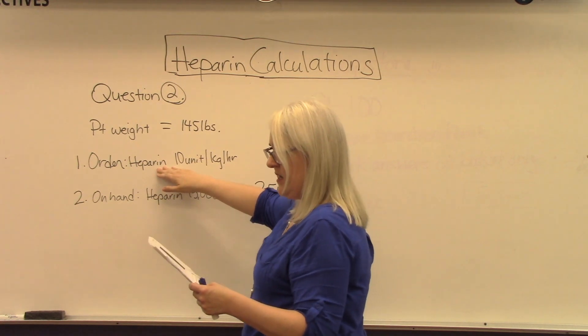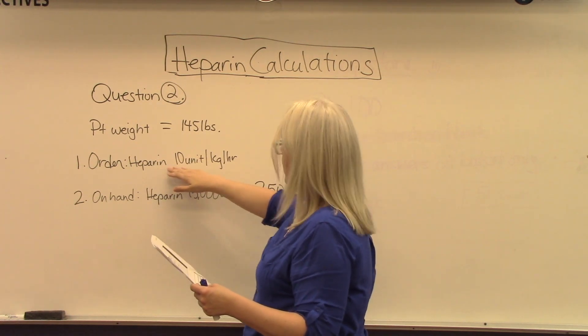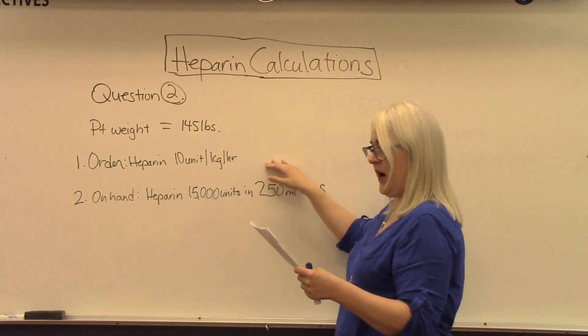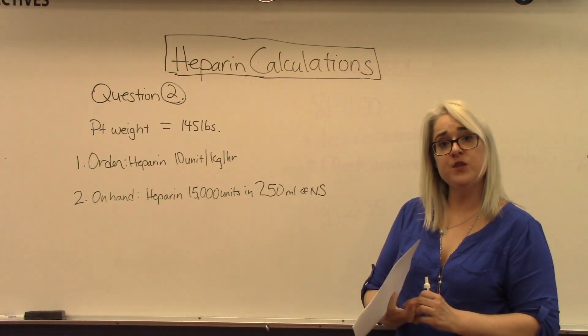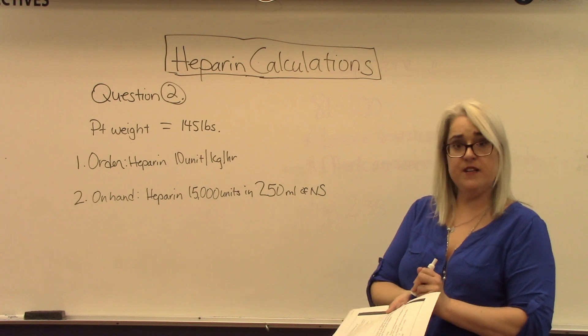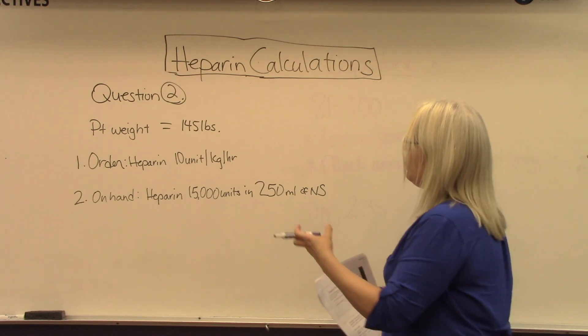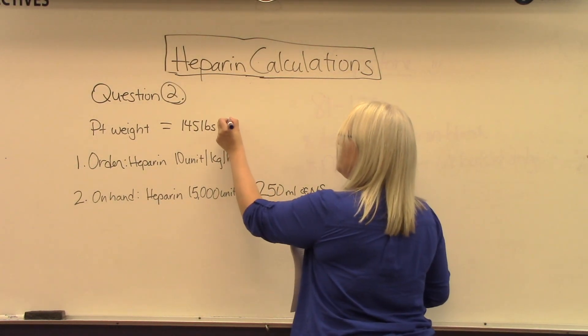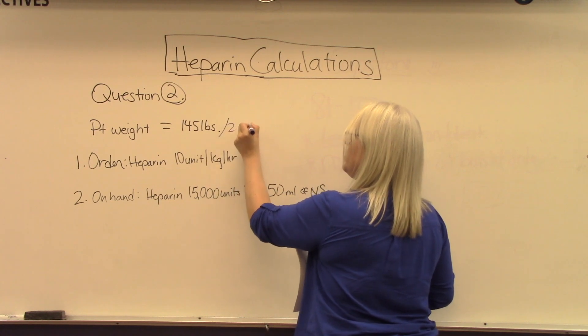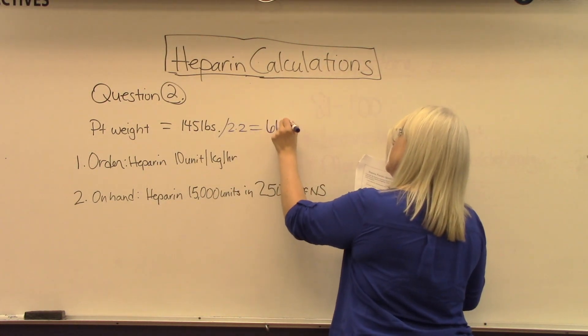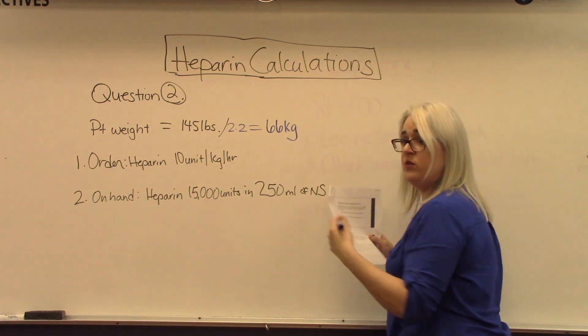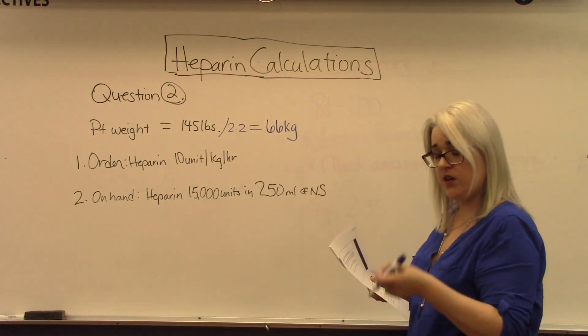The first part of this practice problem is our order for heparin maintenance dose 10 units per kilogram per hour. We need to figure out how many kilograms the patient weighs and plug that into this formula. We take that 145 and divide it by 2.2, which comes to 66 kilograms when we round it to whole kilograms.